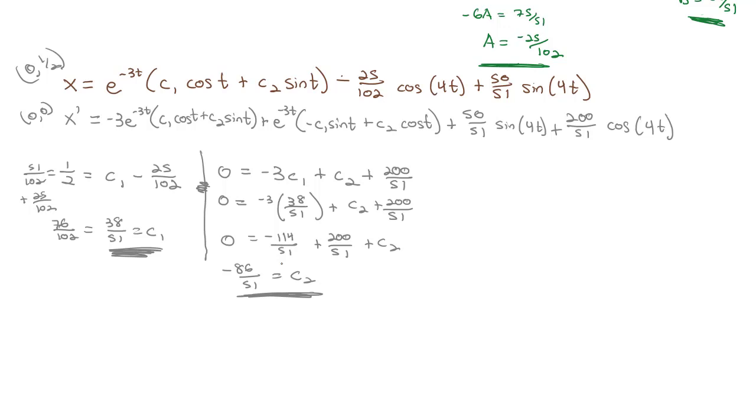The fractions aren't pretty, and the arithmetic to get there might not have been so pleasant. But we were able to still work through this very familiar process to solve now for our equation x, which equals e^(-3t)(38/51 cos(t) - 86/51 sin(t)) - 25/102 cos(4t) + 50/51 sin(4t).